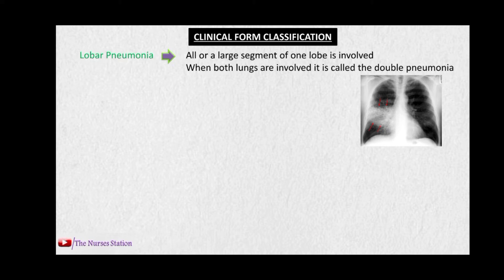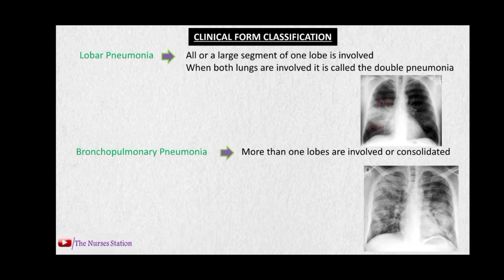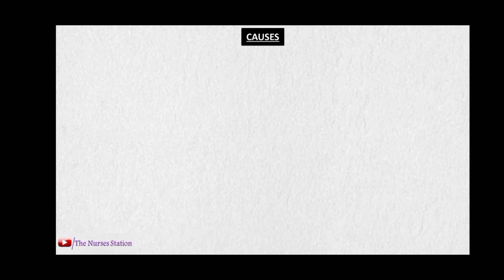The clinical form classification of pneumonia: first is lobar pneumonia, where only one lobe is involved — it may be part of a lobe, a segment, or a whole lobe. When both lungs are affected it is termed double pneumonia. The next is bronchopulmonary pneumonia, where more than one lobe is involved or has consolidation.